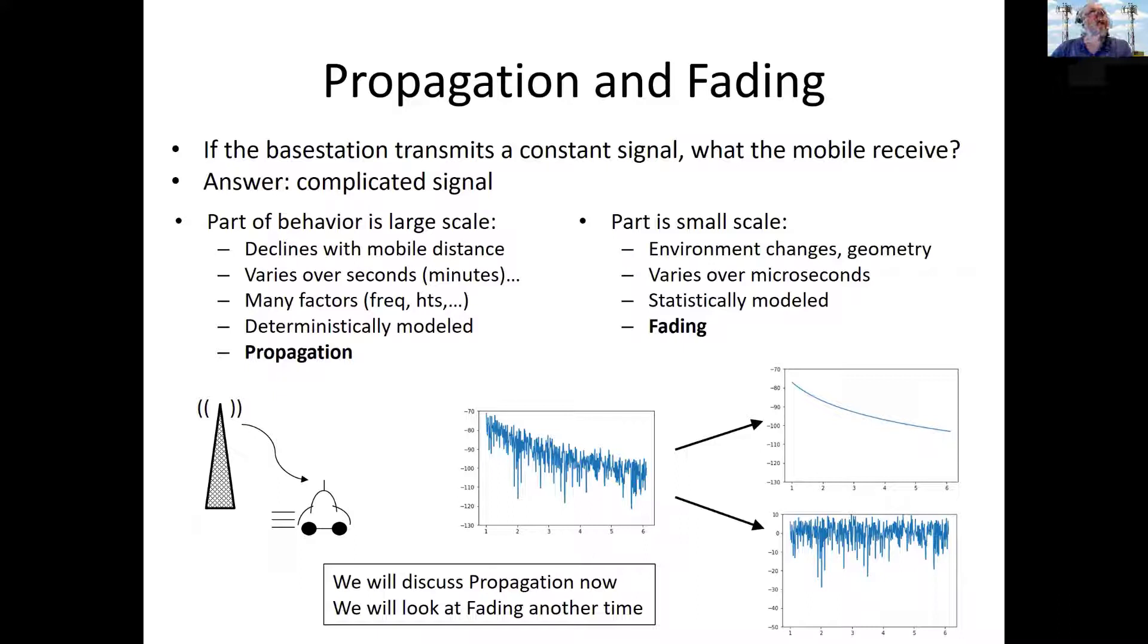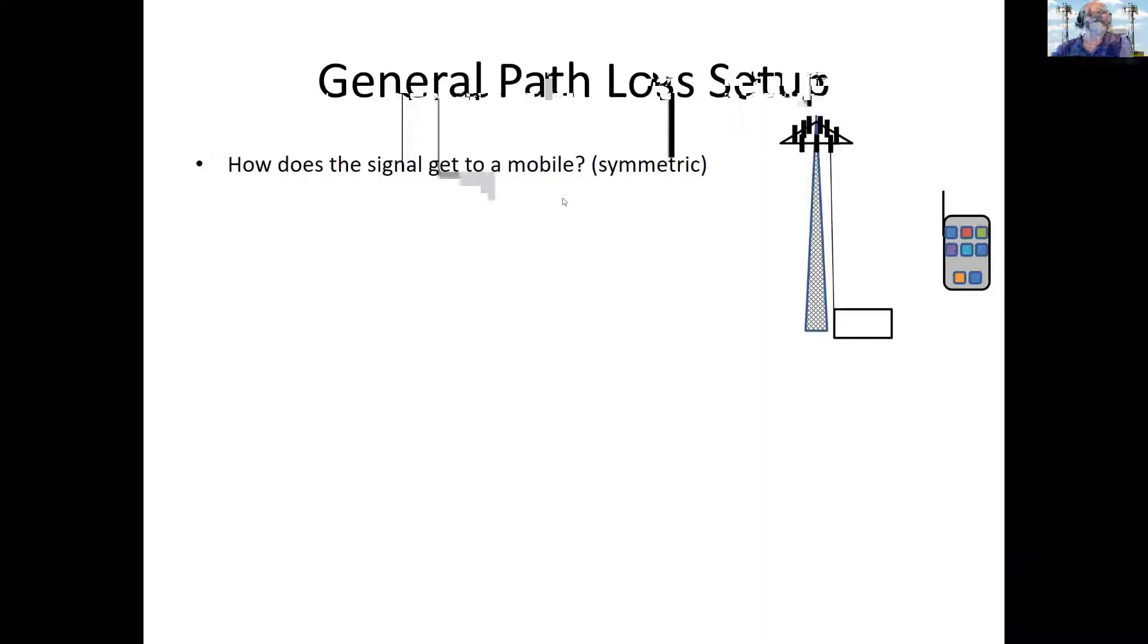So when you're talking about propagation, you're looking at what kind of signal strength, what happens to your signal strength as you move away from the base station or, in general, what the path loss in getting from the base station to the mobile is going to be like. So how does the signal, given that the signal comes into the base station from somebody calling you from the outside or you're downloading a movie or something, you've got a signal you want to send. How does that signal get to your mobile?